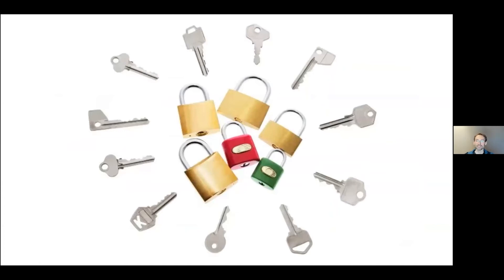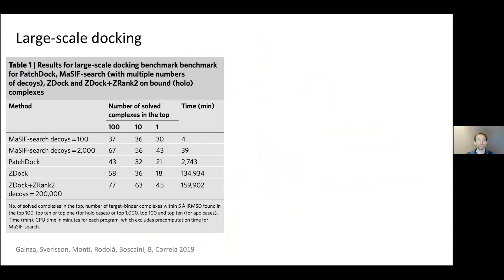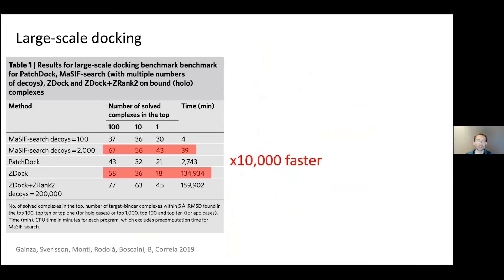For fast PPI search, think of the lock-and-key metaphor with hundreds of locks and thousands or hundreds of thousands of keys to fit quickly. In a large-scale docking experiment we compare to PatchDock and ZDock. The metric is the number of solved complexes in the top 1 or 10, within a certain root mean square distance. We perform on par with PatchDock in accuracy but look at the difference in time — it is about 10,000 times faster.